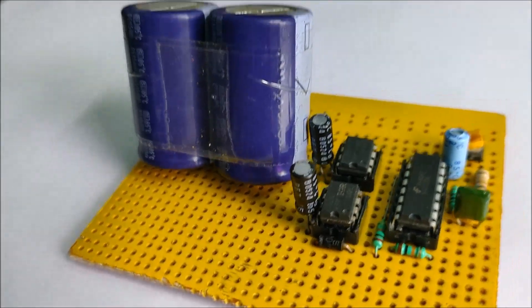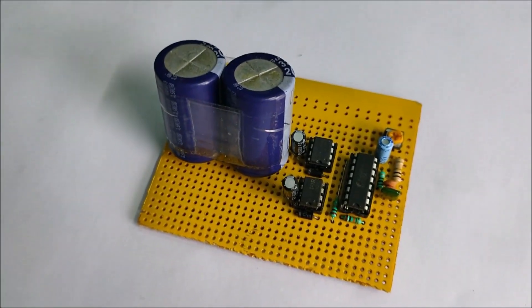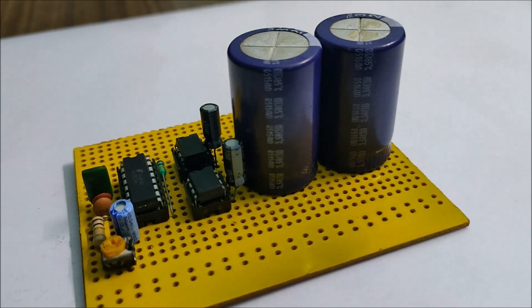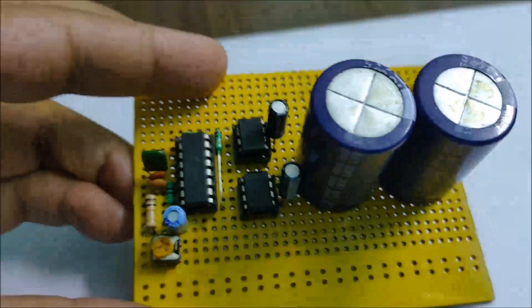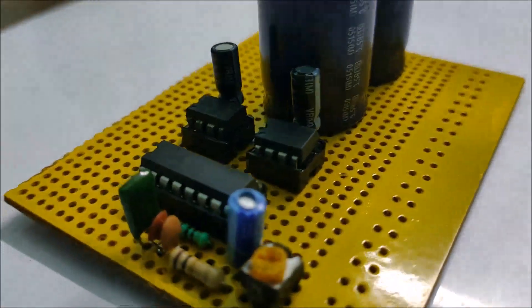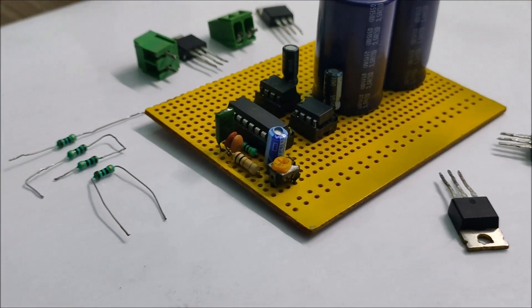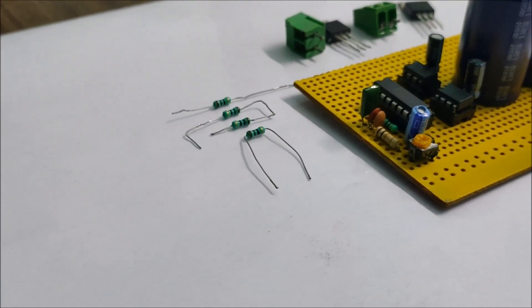It is now time to solder the capacitor banks. After soldering the capacitor banks in place, it is now time to solder the H-bridge MOSFETs, the gate limiting resistors and the screw terminals for the input DC voltage and the output AC voltage.